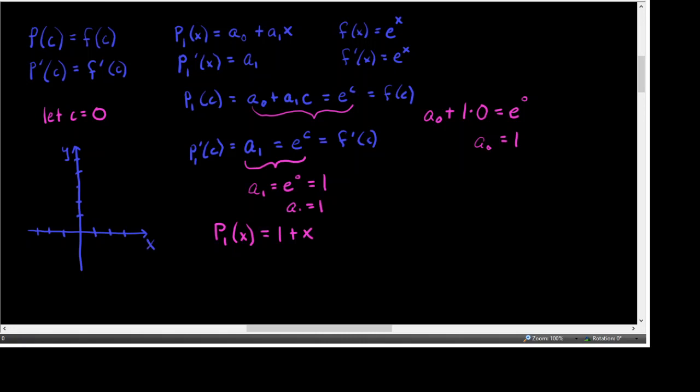I'm going to graph the function E to the X. E to the 0 is 1. E to the 1st is about 2.71828. E squared is going to take this off the grid. E to the negative 1st is about 0.367. E to the negative 2 is about 0.135. So this is what our E to the X graph looks like — that's F.